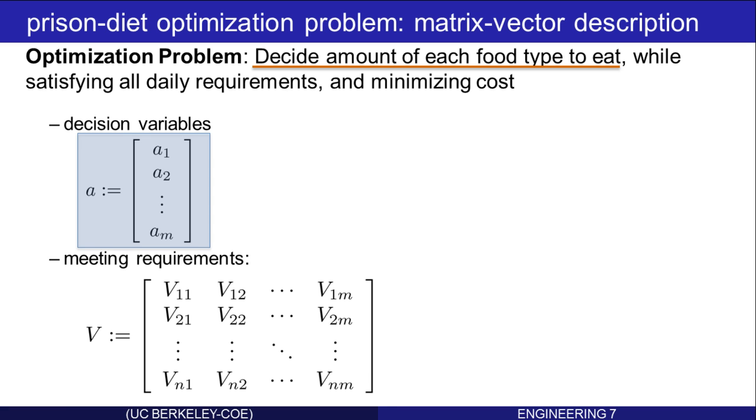Let R be the vector representing the daily requirements for each nutrient. Meeting the daily requirements means satisfying this inequality. Let's see exactly what we mean.